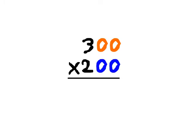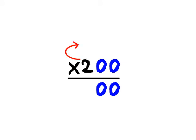So to multiply by 200, we first bring down those blue zeros. And then we multiply the 2 times the 300 and put the answer down here.